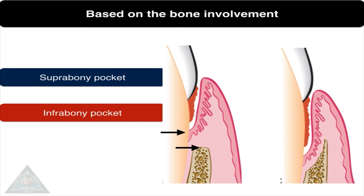Pockets can also be classified based on bone involvement as suprabony pocket and infrabony pocket. In a suprabony pocket, the base of the pocket is coronal to the crest of the bone, whereas in an infrabony pocket it is apical to the crest of the bone. In a suprabony pocket you can see a horizontal type of bone destruction, whereas in an infrabony pocket you can see a vertical type of bone destruction.